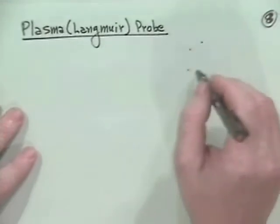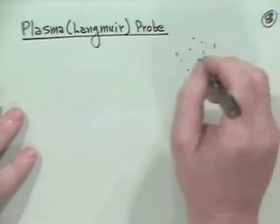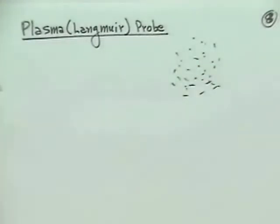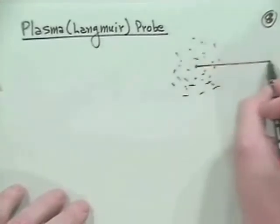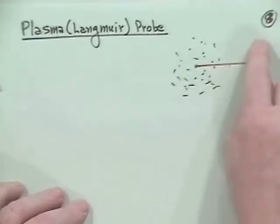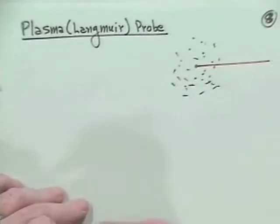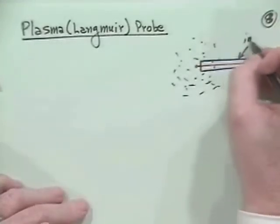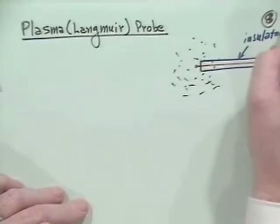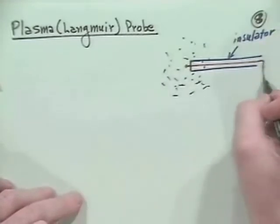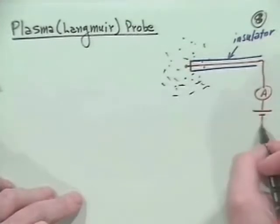The basic idea is, imagine we have a plasma over here with all kinds of positive and negative particles in it. And suppose that we put into it a rod or probe, as it will be called. We'd collect charge all the way along the rod. So what we do is, let's put an insulating sheath around it. Okay, so this is an insulator. And then what we do is connect this up to basically an ammeter and a battery to ground.